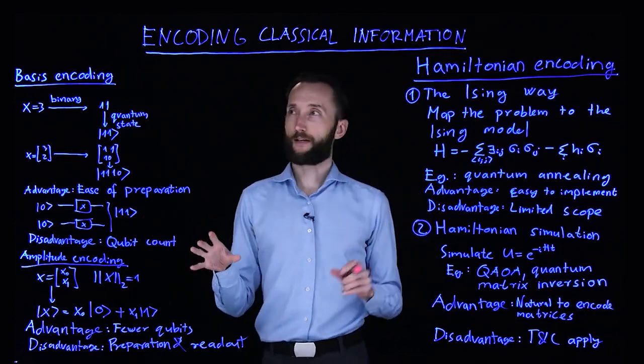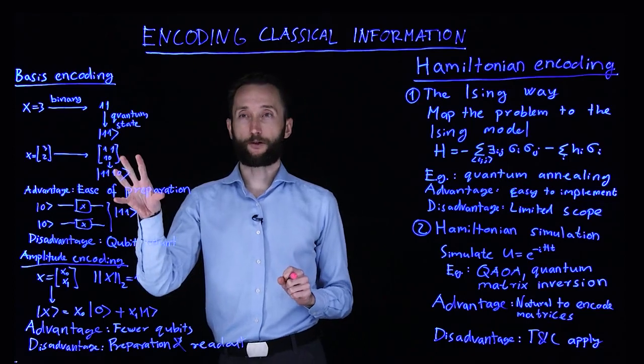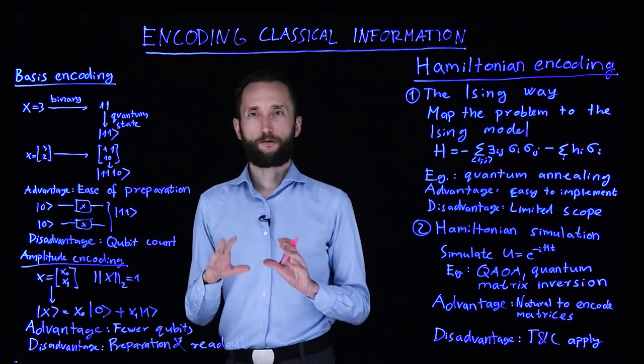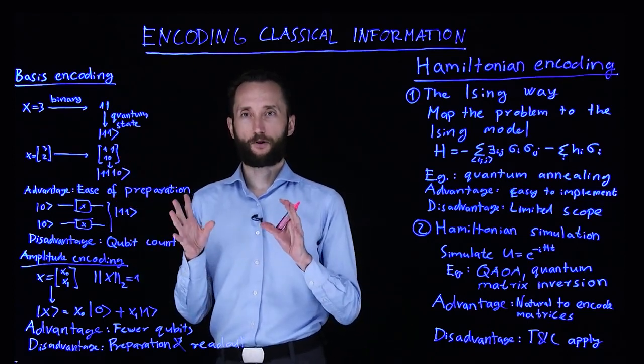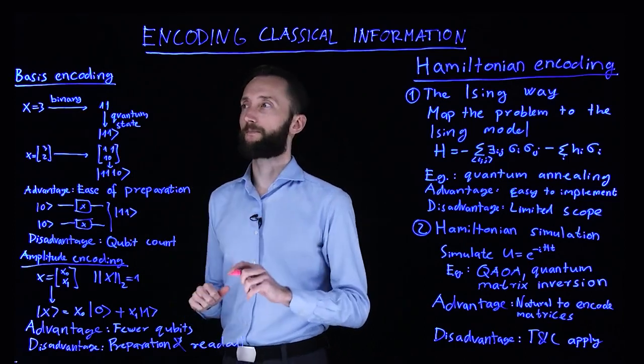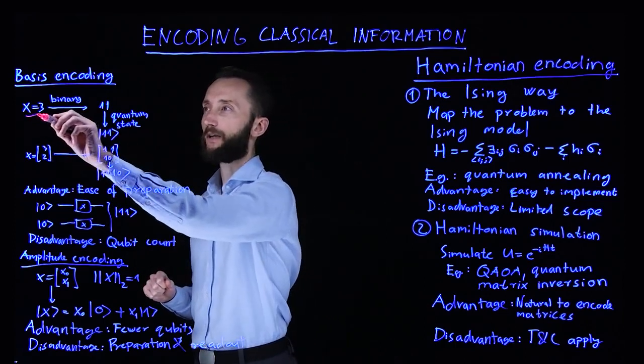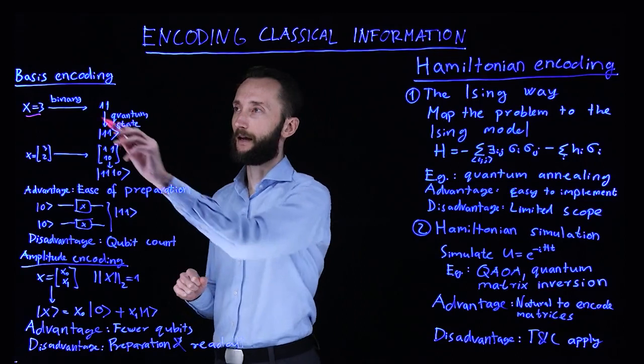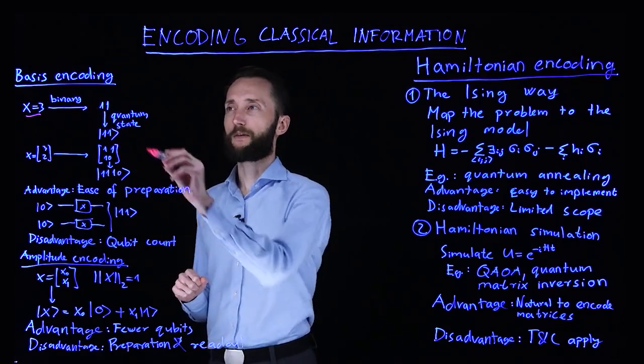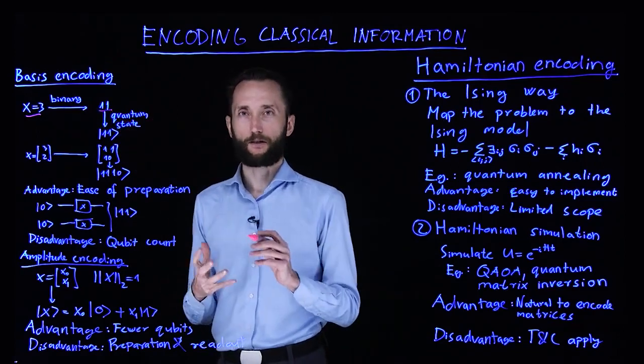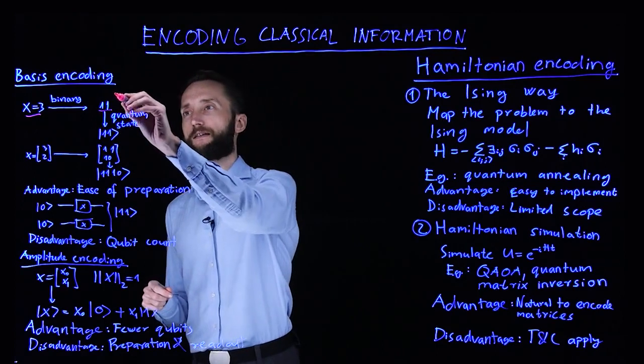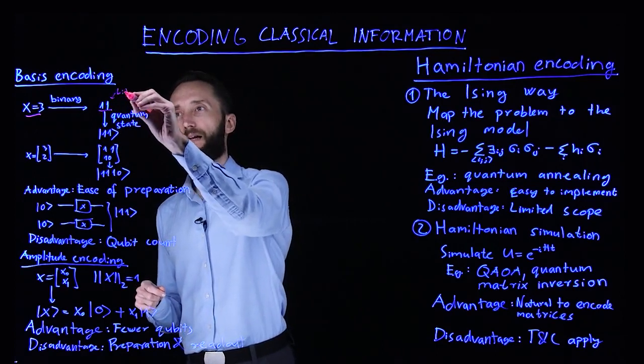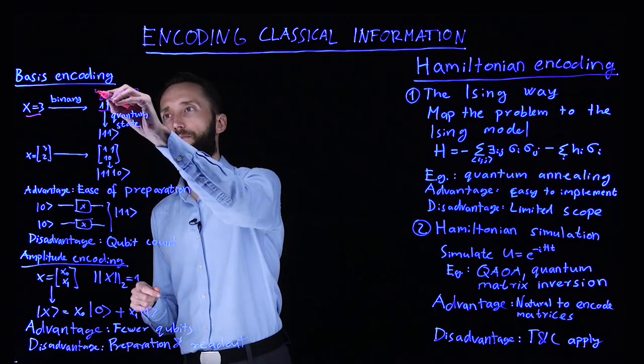The easiest thing to do is something called basis encoding. In this case, you don't do anything different from what you do on a digital computer. So say you have the number 3 that you would like to encode, then you would write it as a binary. This would be the representation of digital computing, where this is bit 0 and this is bit 1.